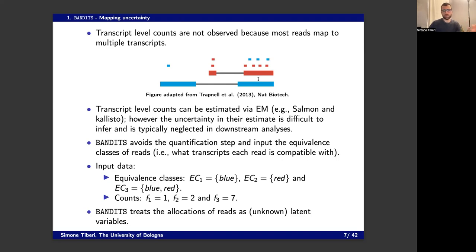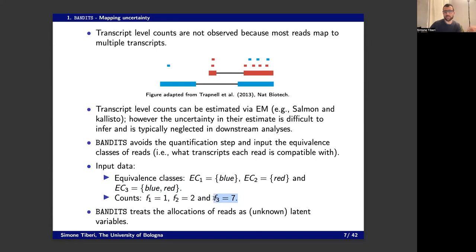To account for the uncertainty in the reads, we avoid the quantification step from Salmon, Kallisto, or RSEM, and instead input the raw data — the equivalence classes — which describe what transcripts each read is compatible with. For example, one read is compatible with the blue transcript only, two reads with the red transcript only, and seven are compatible with both blue and red. We use a latent variable and data augmentation approach where the allocation of these ambiguous reads is treated as a parameter that we sample in the MCMC.